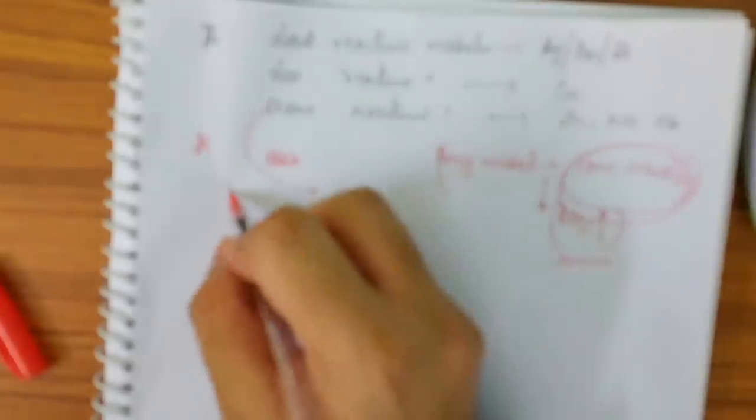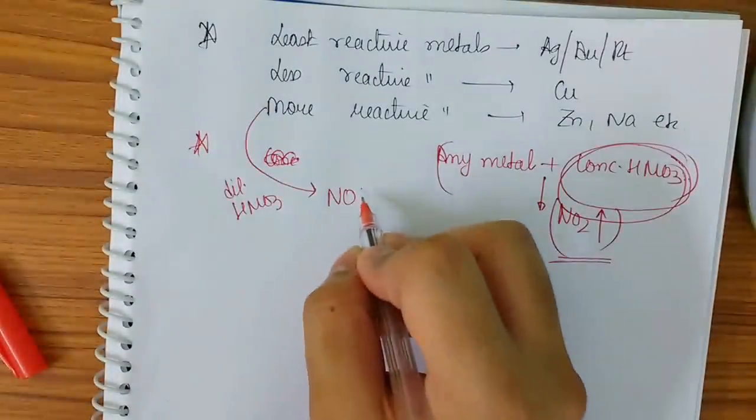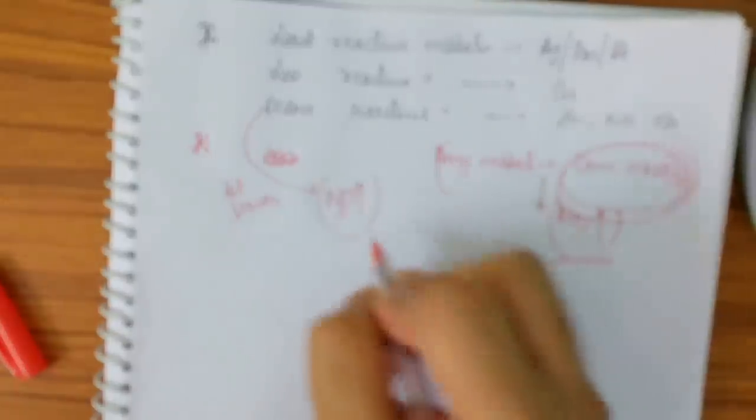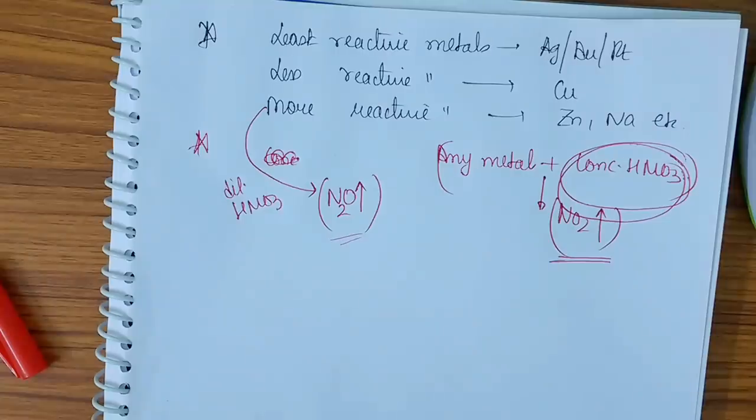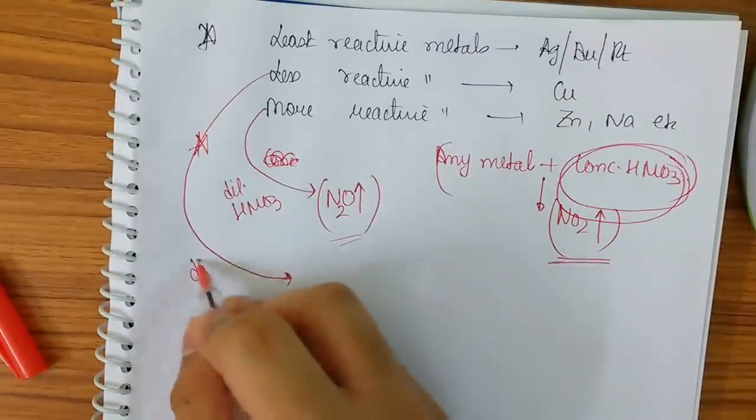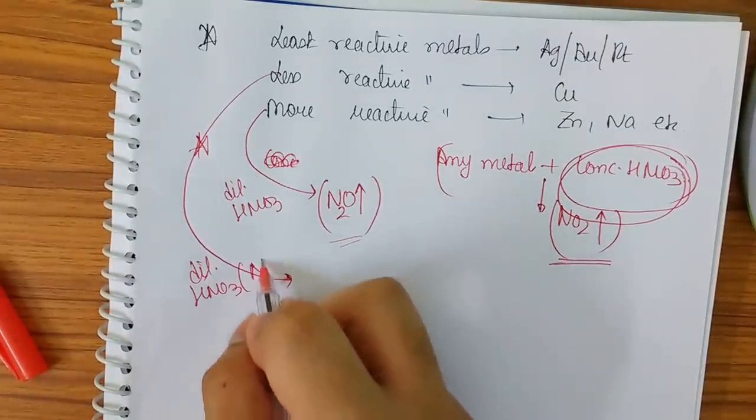So if I take more reactive metals along with dilute HNO3, I will be getting N2O gas. Actually, N2O. This was the basic confusion I also had. Less reactive will be in dilute HNO3, it will always give NO gas.